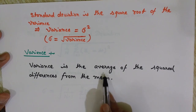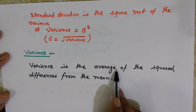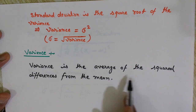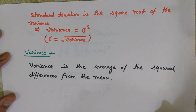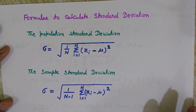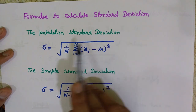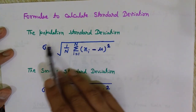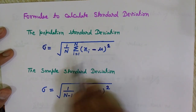We take each number, subtract the mean from it, square that difference, and then find the average of all those squared values. If you are confused, let me proceed and show you the formula to find the standard deviation. Here you can see the formula — although you might think it is complex, it is actually very simple.